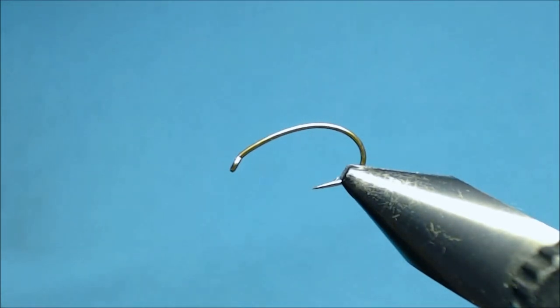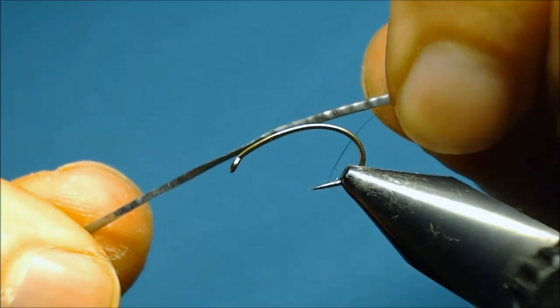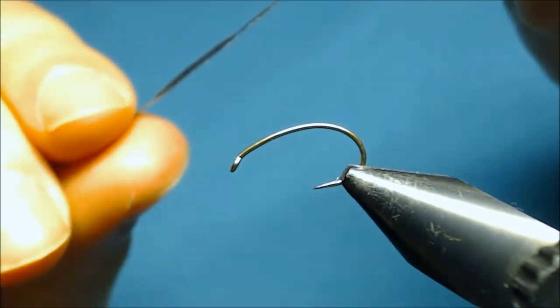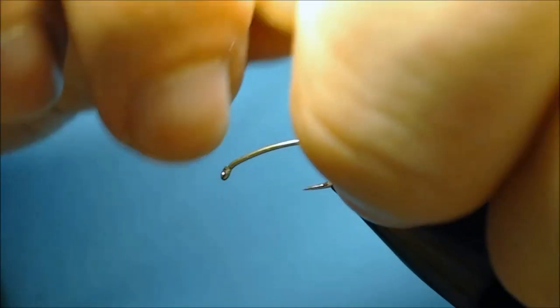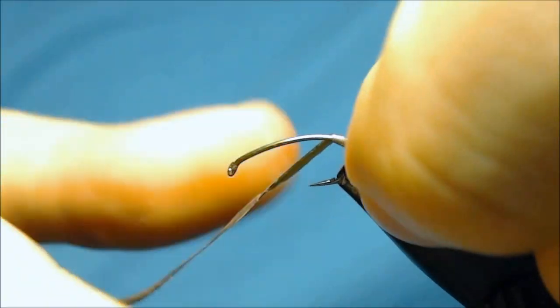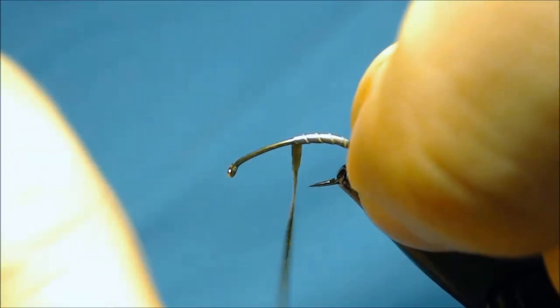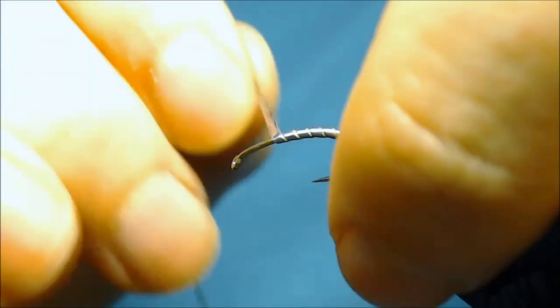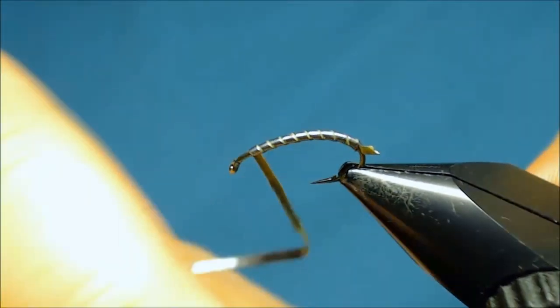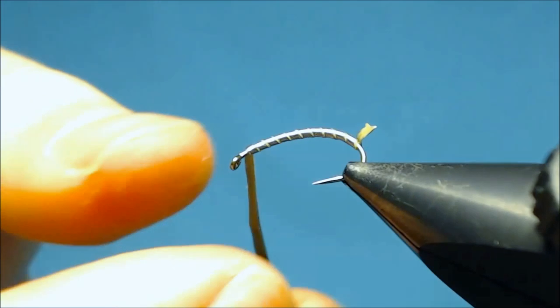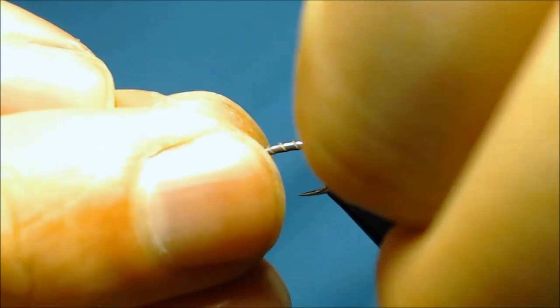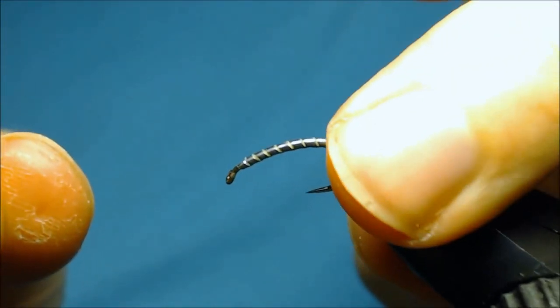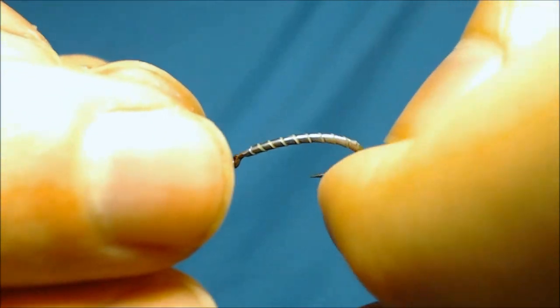To add some weight to the fly I use some sticky back lead foil that I've already cut in a 1-2mm strip. And then starting at the bend I'll just bring up touching turns with the foil coming up to one eye length shorter than the eye. And then we can just break off the tags.